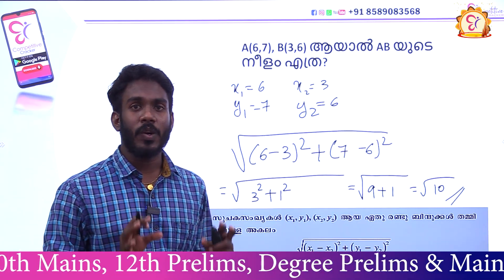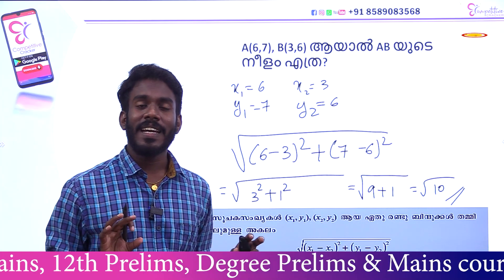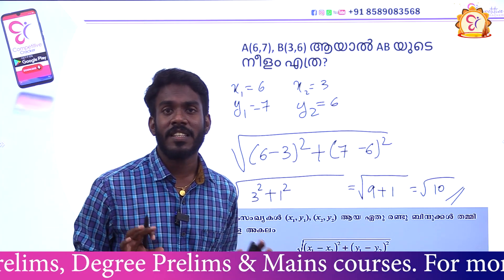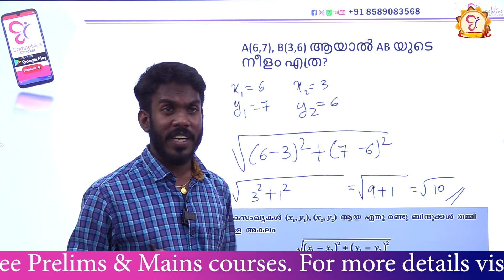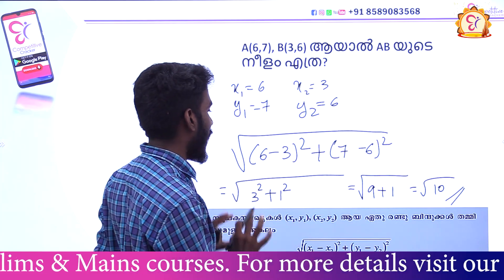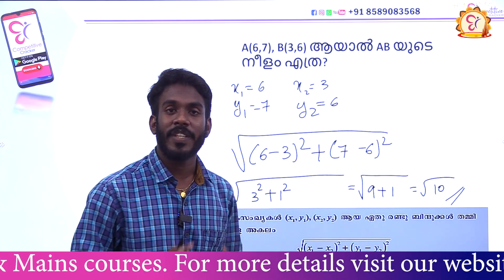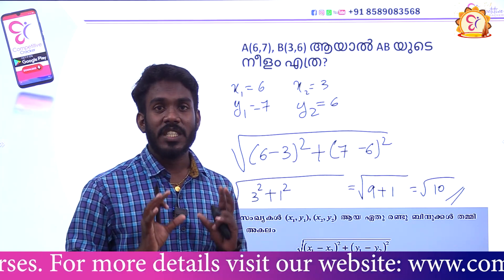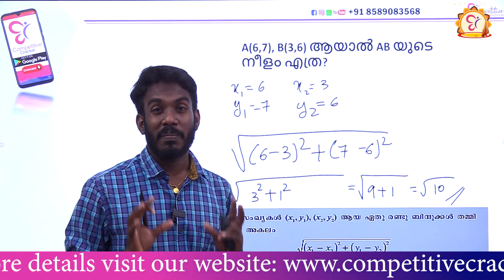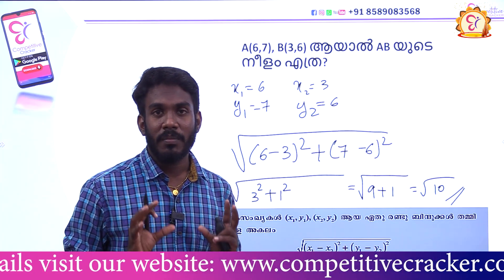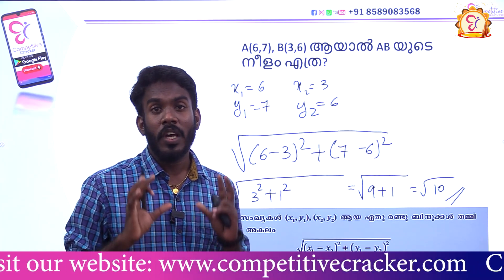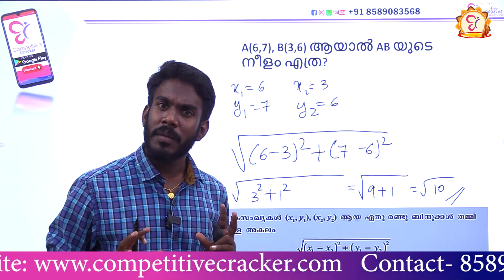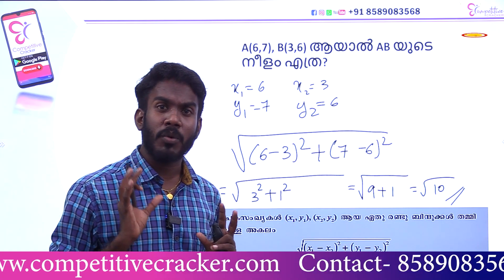These are two coordinates — x-axis and y-axis coordinates in different equations. The equation is the root of x1 minus x2 the whole square plus y1 minus y2 the whole square. This is the core part students need to study.